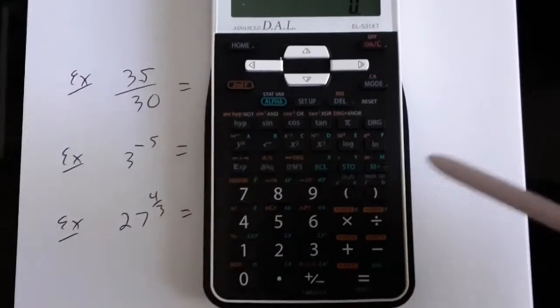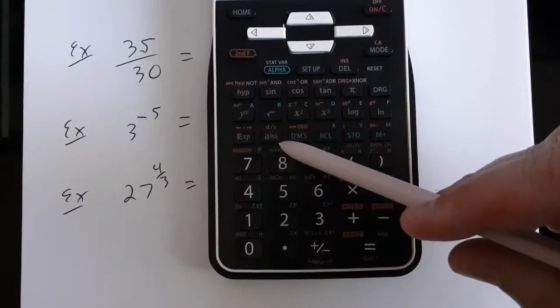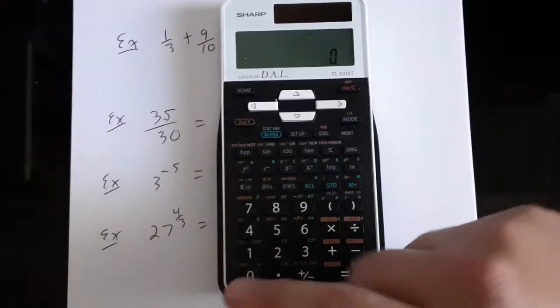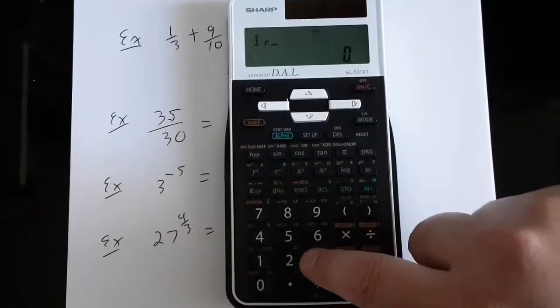In order to use fractions with my calculator, I'll use the fraction button, which is the one that looks just like a fraction, A B over C. So if I wanted to enter a number like 1 third, I would enter 1, fraction button, 3.